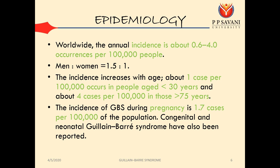Regarding epidemiology: worldwide, the annual incidence is about 0.6 to 4 occurrences per 1 lakh population. The men-to-women ratio is 1.5 to 1, so men are 1.5 times more affected compared to females. Incidence increases with age — about 1 case per 1 lakh in people aged more than 30 years, and about 4 cases per 1 lakh in those more than 75 years. Incidence of GBS during pregnancy is 1.7 cases per 1 lakh. Congenital and neonatal Guillain-Barré syndrome have also been reported.